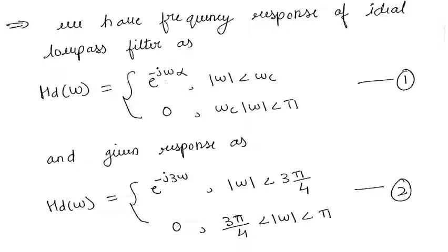We have the frequency response of ideal low-pass filter as e raised to minus j omega into alpha for modulus of omega less than omega c, and 0 for modulus of omega in the range omega c to pi.